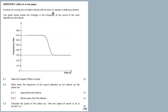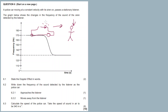Question six: a police car moving at a constant velocity with its siren on passes a stationary listener. The graph below shows the changes in the frequency of the sound of the siren detected by the listener. The police car first approaches the stationary listener, then passes and moves away.